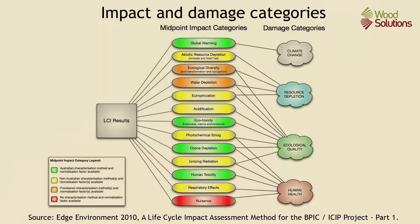To run an LCA, the environmental impacts of various materials and processes are determined through a life cycle inventory, or LCI. This diagram shows just a small part of the connections considered in an LCA. It is a schematic overview of the recommended linkage of impact and damage categories discussed during a recent program to develop consistent LCA information in Australia.